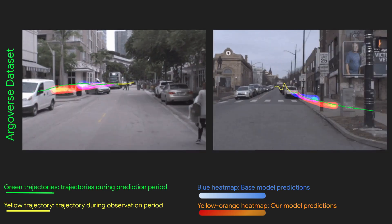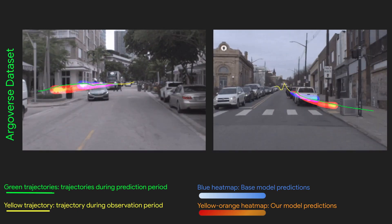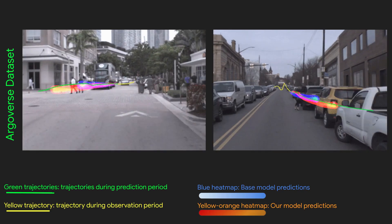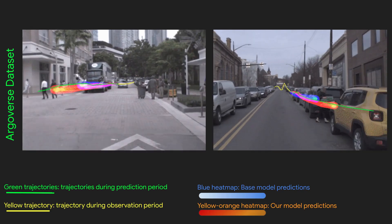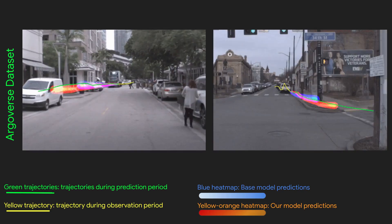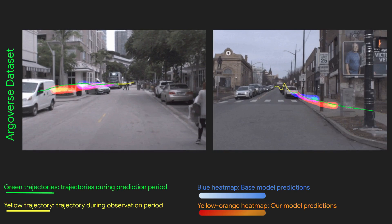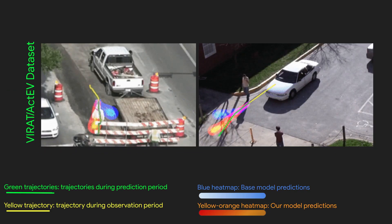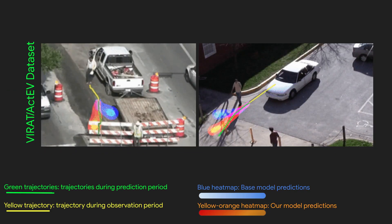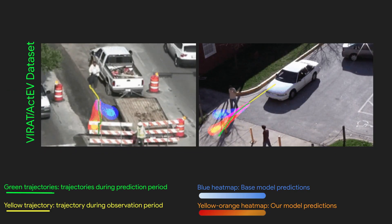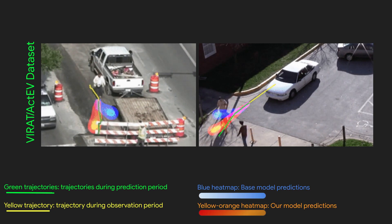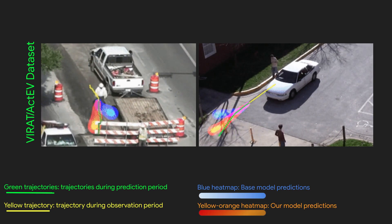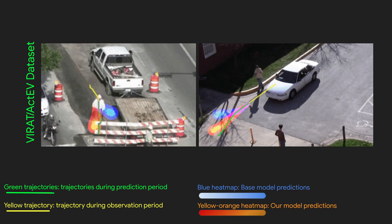Here are the visualizations on the Argoverse dataset, and here is the VIRAT activity dataset. As you can see, the baseline model predicts the wrong turns.